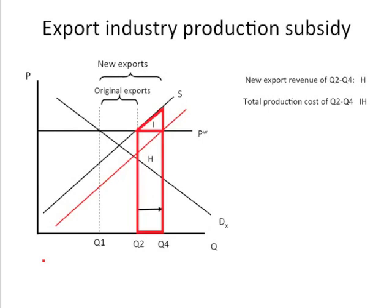It costs the firms IH to actually produce it. Now, some of that is covered by the government subsidy — no doubt about it — but that's a transfer from taxpayers through the government to firms, so that's really no welfare effect. But what you do have is a net loss of I. The true increase in total variable cost associated with increasing from Q2 to Q4 is going to be more than any revenue that you receive from the foreign market.